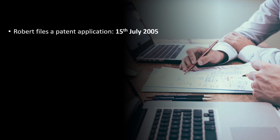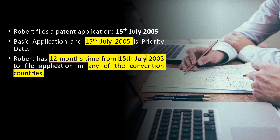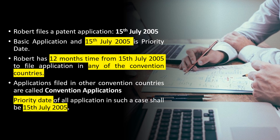Let's see one small example. Robert, an applicant, files a patent application in his country — the UK — on 15th July 2005. His application in the UK will be called the basic application, and 15th July 2005 is the priority date for his application. Robert has 12 months from 15th July 2005 to file applications in any convention countries he wants. Applications filed in other convention countries are called convention applications, and the priority date for all his applications in this case will be 15th July 2005.